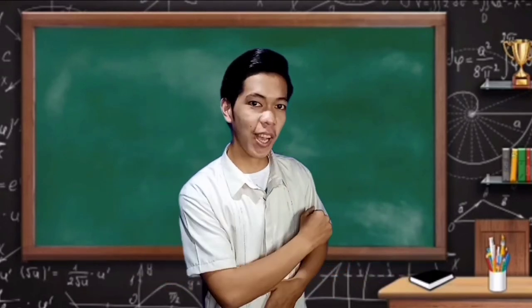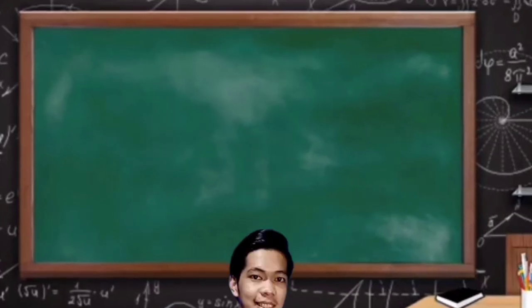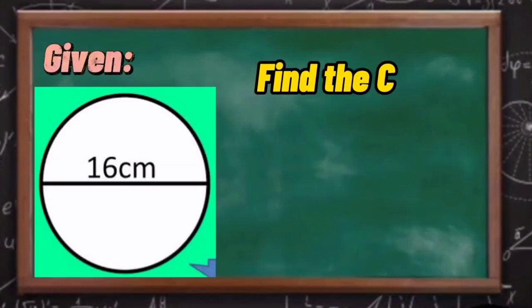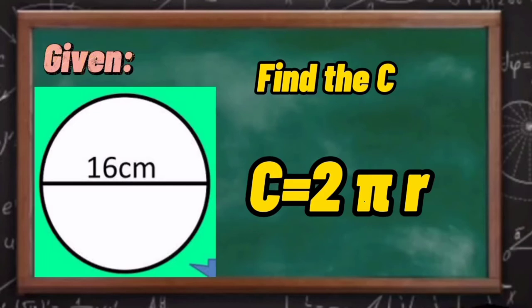Yes, we are! So, find the circumference of this circle with a diameter of 16 cm using this formula. In this example, radius is not given but diameter is given. Again, to find the radius,